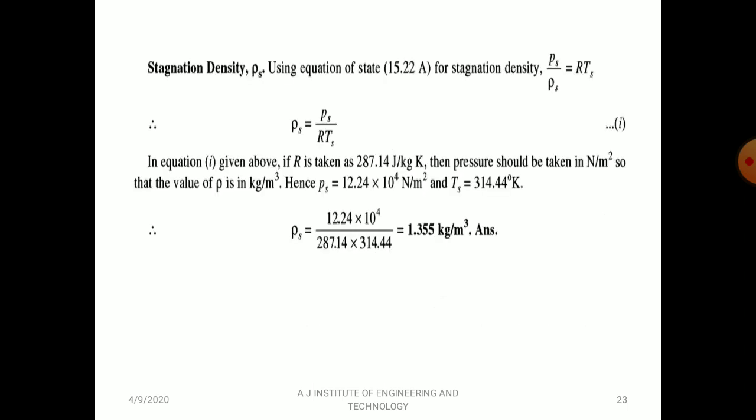For stagnation density, use the equation of state Ps/ρs = RTs, rearranged to ρs = Ps/(R·Ts) = (12.24 × 10⁴)/(287.14 × 314.44) = 1.355 kg/m³.